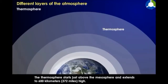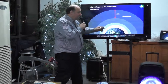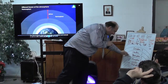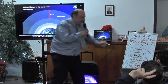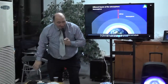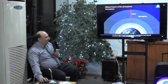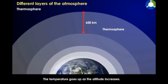Thermosphere. The thermosphere starts just above the mesosphere and extends to 600 km. This is the fifth layer. The temperature goes up as the altitude increases. Why is it called the thermosphere? Because the temperature is very high.